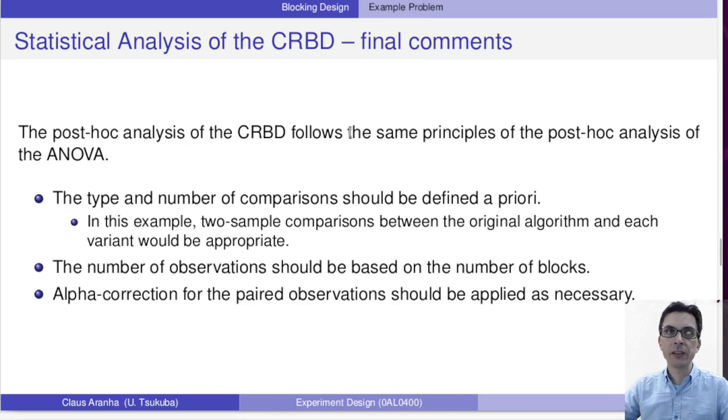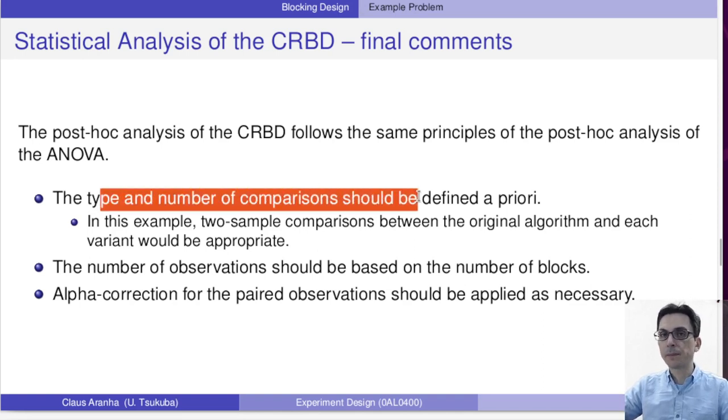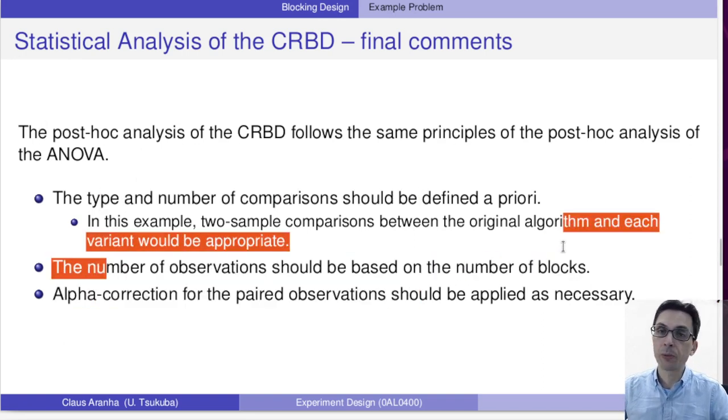Now, the post hoc analysis of the CRBD follows the same principles of the post hoc analysis of the ANOVA. So I recommend that you look back at the ANOVA chapter to see how we do the post hoc analysis. The type and number of comparisons need to be defined a priori. In this case, because we're comparing an original algorithm against six variations, it makes sense to use a one against all, where the one is the original and all the others, to try to find out which of the variants have a significant difference from the original.